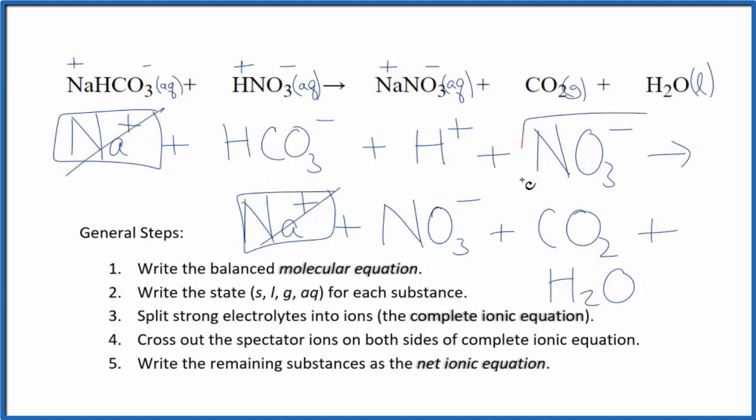Here's a nitrate ion in the reactants, and again, we have one in the products. Get rid of that. What's left, that's the net ionic equation for this NaHCO3 plus HNO3.